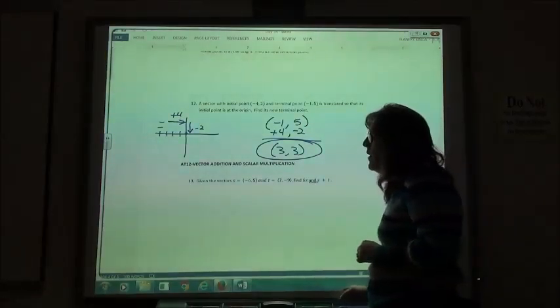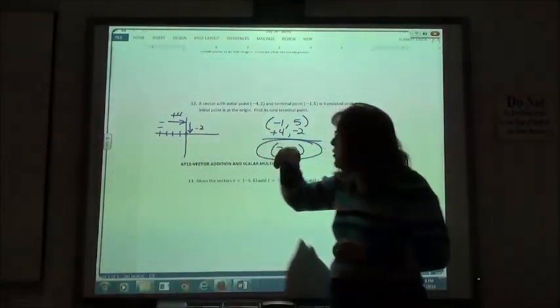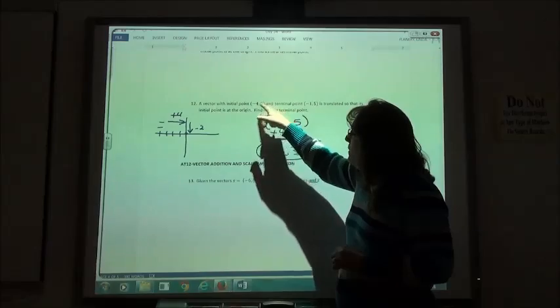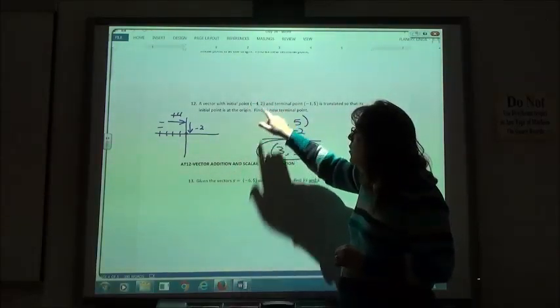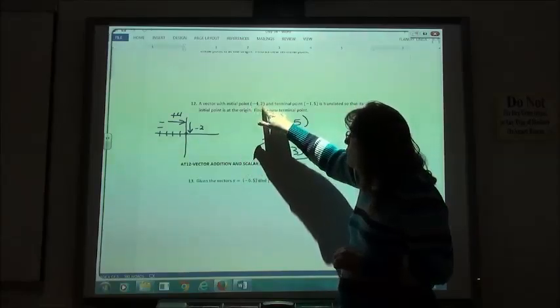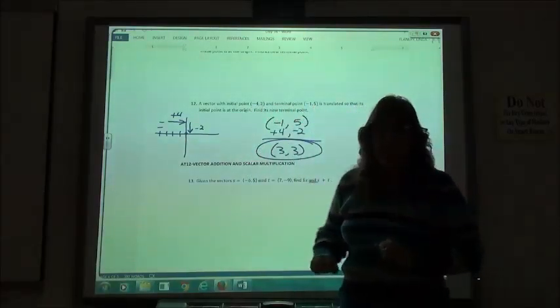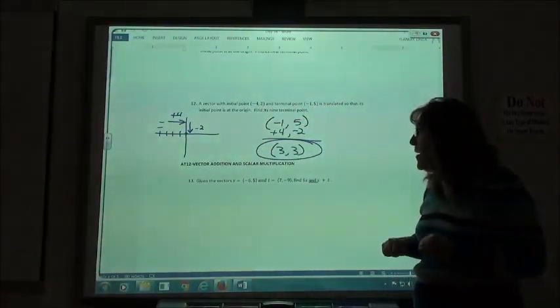So really, without drawing the graph, which you can do, you're just going to do the opposite of these. My initial point is at negative 4, positive 2. I'm going to add 4 and subtract 2 from my terminal point. And I can find the location of my new terminal point.